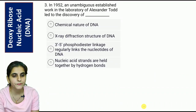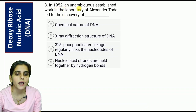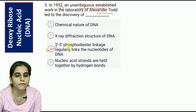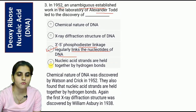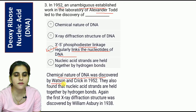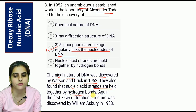In 1952, work in the laboratory of Alexander Todd led to the discovery of what? The correct answer is option C: the 3'-to-5' phosphodiester linkage regularly links the nucleotides of DNA. This relates to the chemical nature of DNA. They also found that nucleic acid strands are held together by hydrogen bonds.